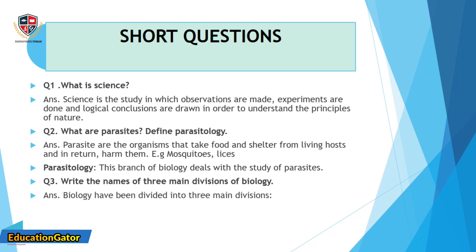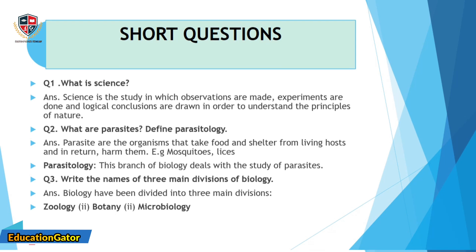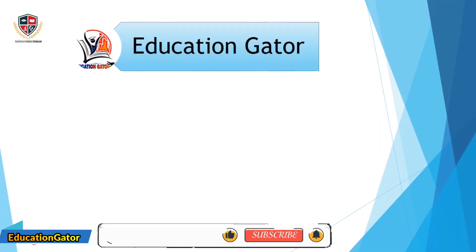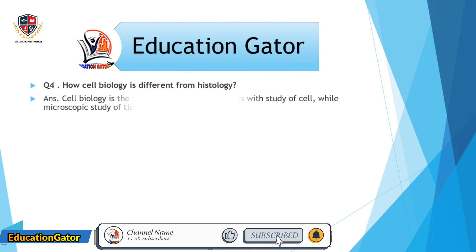Question number 3: Write the names of three main divisions of biology. Ans. Biology has been divided into three main divisions: Zoology, Botany, and Microbiology.